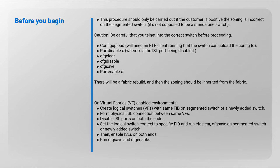On virtual fabrics-enabled environments: create logical switches with the same FID on the segmented switch or a newly added switch. Form a physical ISL connection between the same FIDs. Disable ISL ports on both ends, set the logical switch context to the specific FID, and run cfg clear and cfg save on the segmented or newly added switch. Then enable ISLs on both ends, run cfg save and cfg enable.